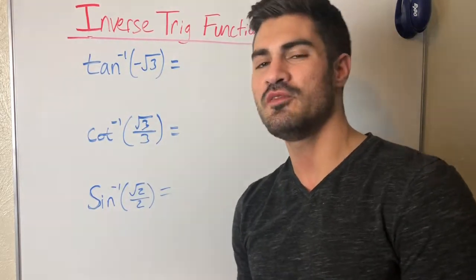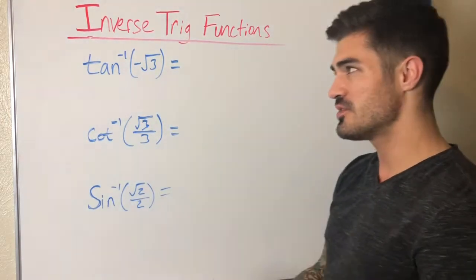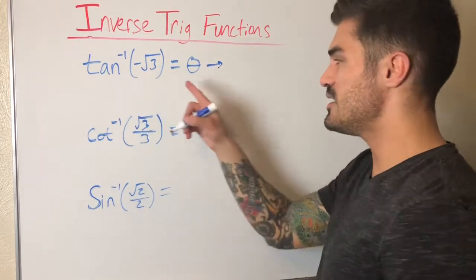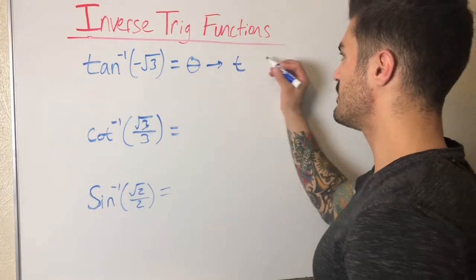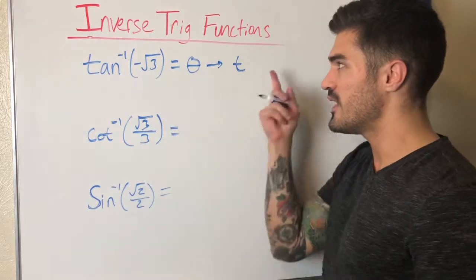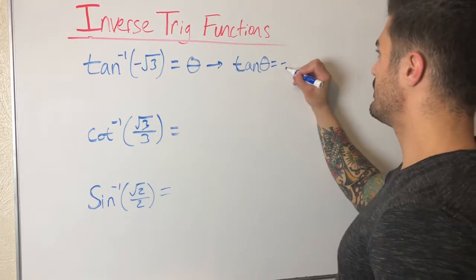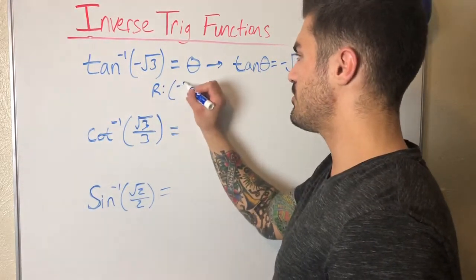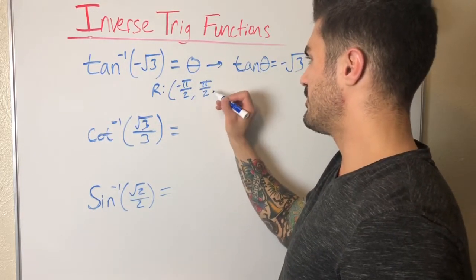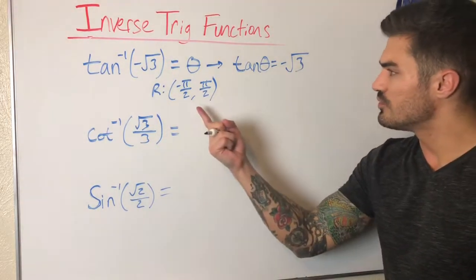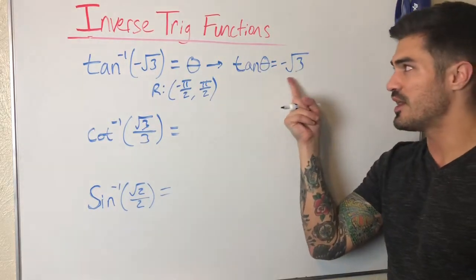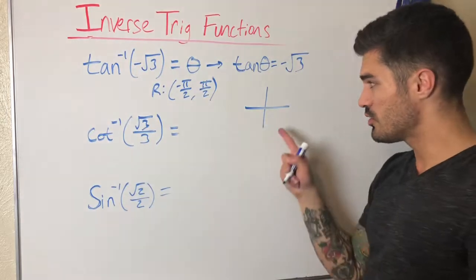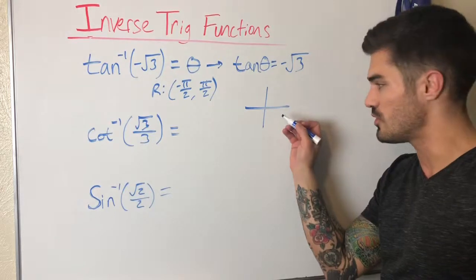At this point I encourage you to pause the video, try the remaining examples on your own, then press play to check your answer. For tangent inverse of negative root three: we're always looking for theta when dealing with inverse trig, so I write equals theta and rewrite as tangent theta equals negative root three. I have to remember the range of tangent inverse: negative pi over two to pi over two, not including the endpoints. Since this value is negative, and tangent is negative in quadrants two and four, but I'm limited to quadrants one and four, we know theta has to be in quadrant four.